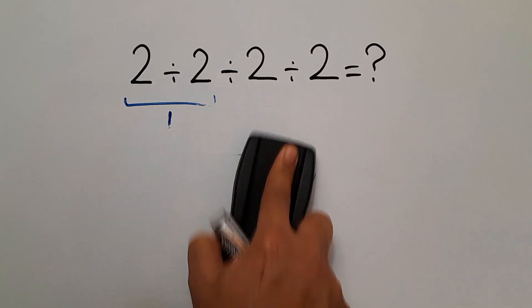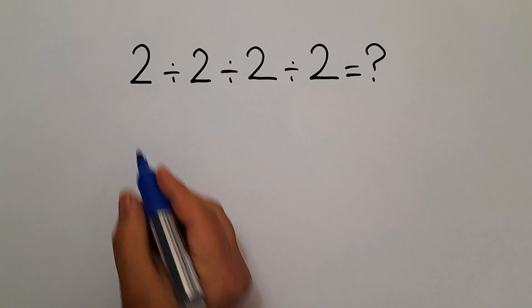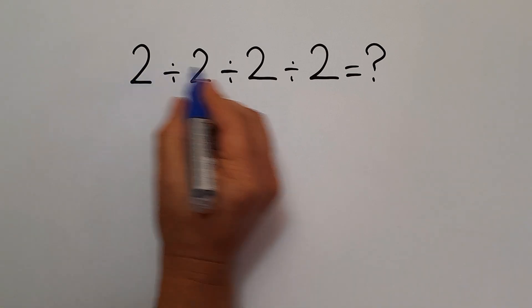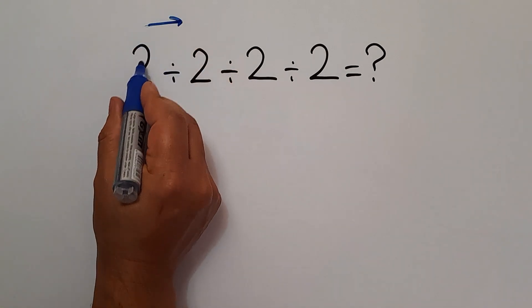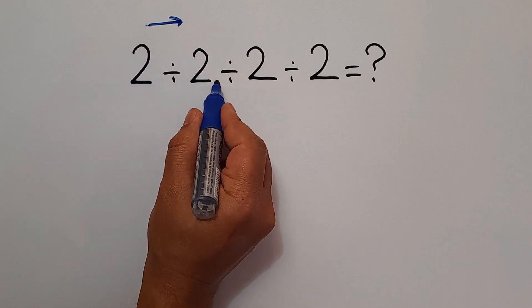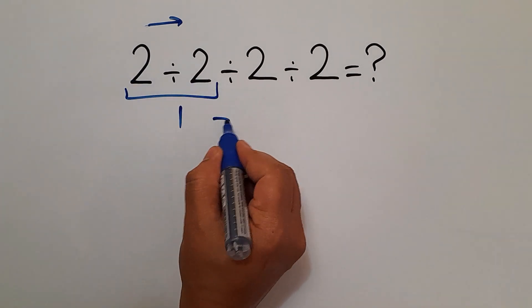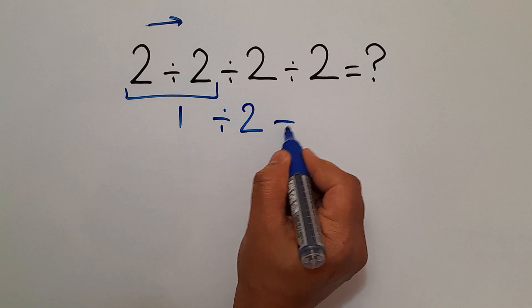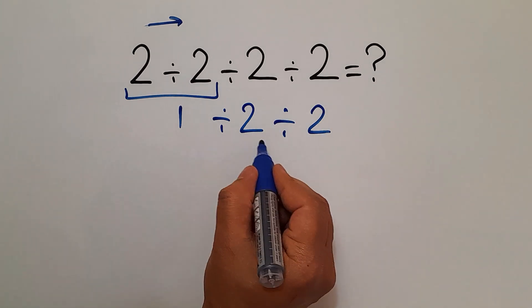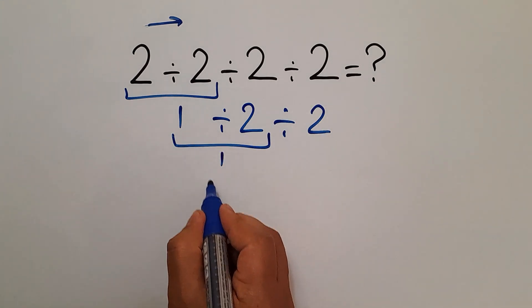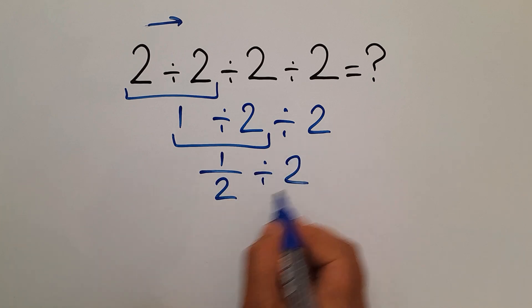Because according to the order of operations, we have to work from left to right. Here, first we do 2 divided by 2, which equals 1. Then divided by 2, and again divided by 2. 1 divided by 2 equals 1 over 2, then divided by 2.